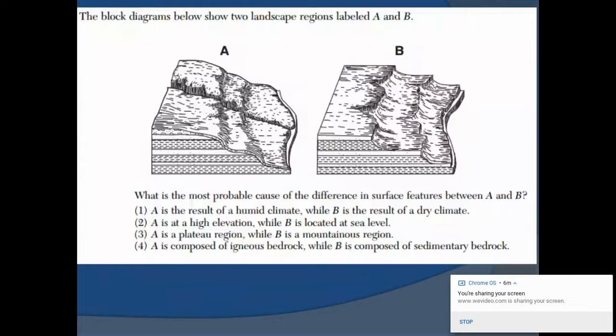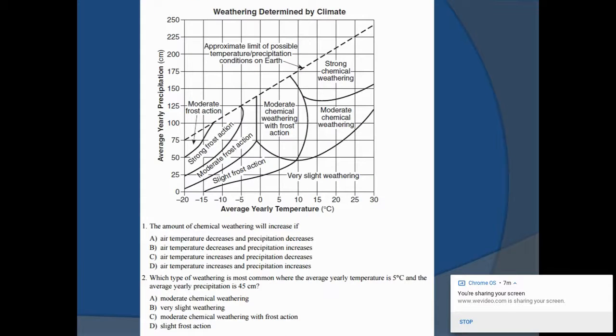The block diagrams show two landscape regions labeled A and B. What is the most probable cause of the difference in the surface features? You could see the rounded hills in A and B is more sharp and angular. Just looking at it, I would say A is probably more humid and B is definitely dry. Choice one: A is a result of a humid climate or B is a result of a dry climate. That's certainly true. A is at a high elevation while B is located at sea level? There's no indication of that whatsoever. The answer is one.